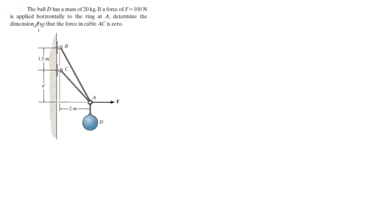Alright guys, now we're going to do this problem that says the ball D has a mass of 20 kg. If a force F of 100 N is to pull this ring at A to the right, then determine the dimension D right here so that the force in AC is zero, so this doesn't exist.